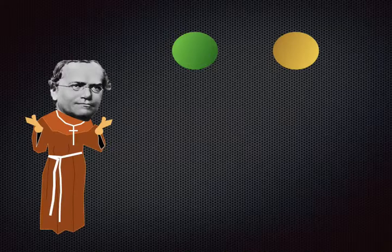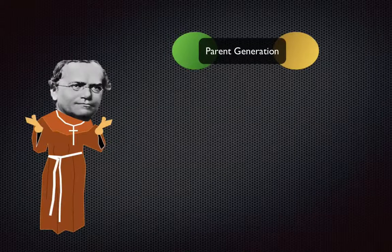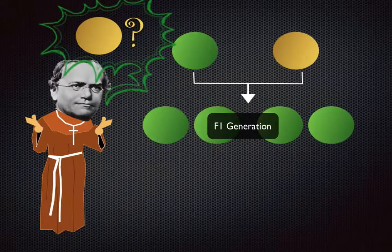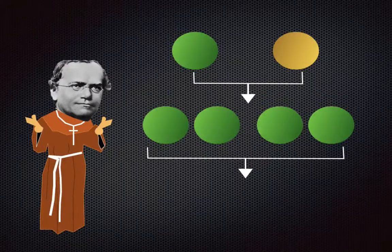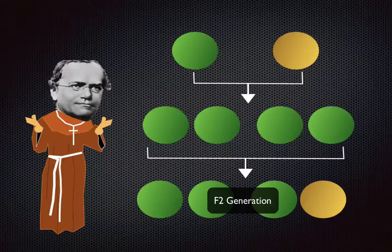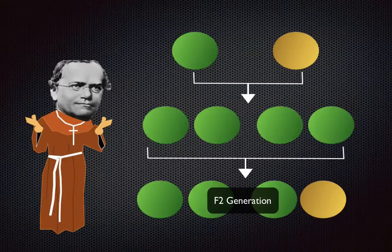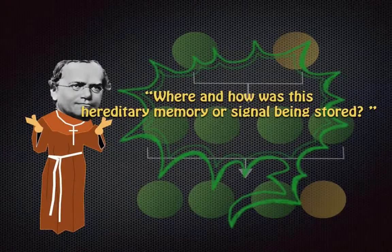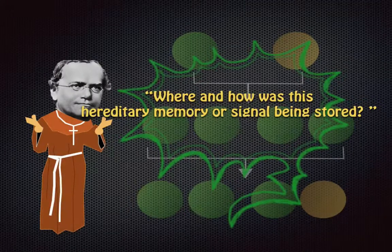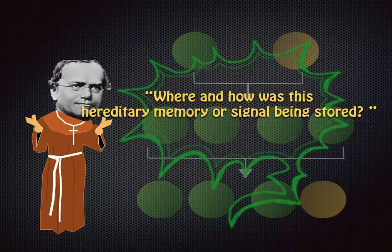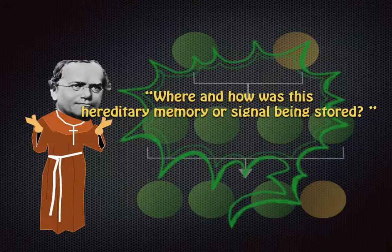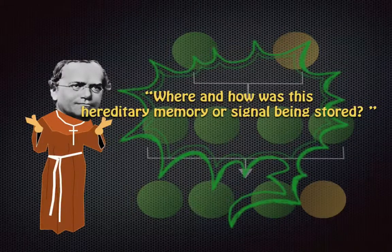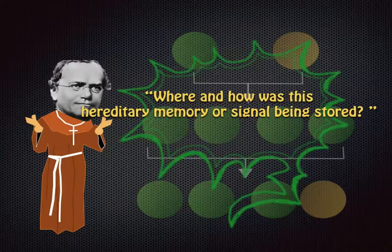When he pollinated a green pea with a yellow pea, he noticed that in the next generation the yellow pea was gone. As he continued to grow these peas, he realized that in the next generation that yellow characteristic would come back. A big question that he asked was where and how was this hereditary memory or signal being stored? That was the big question that got this whole thing started in DNA.